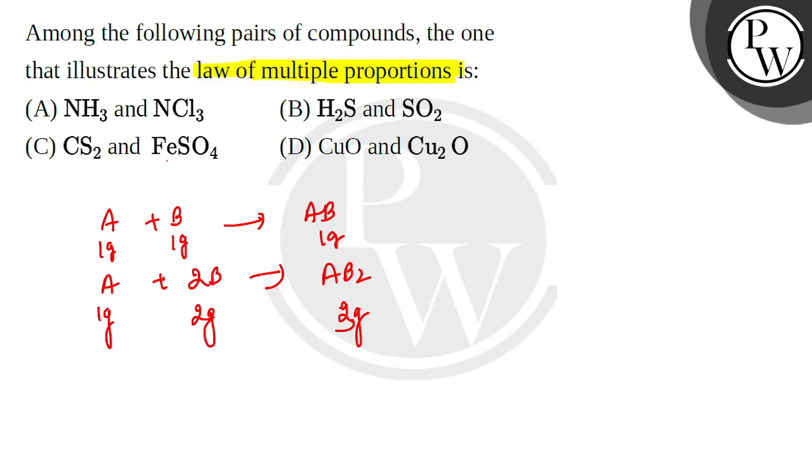So what do we see in this law? There will be two different compounds but the elements will also be same. Now if you see in the first one, there is one element here, there is also one element here, but here is H and here is C, meaning there are total three types of elements. But in multiple proportions, there are only two types of elements. So A is wrong.